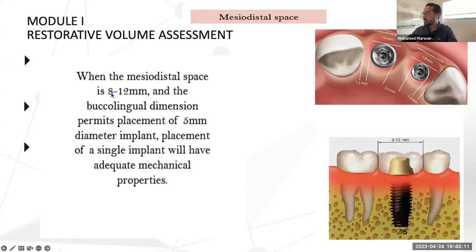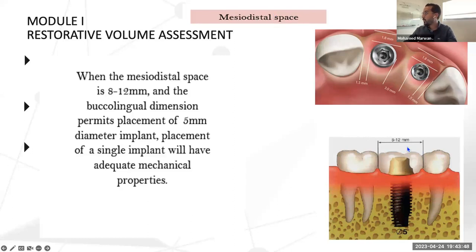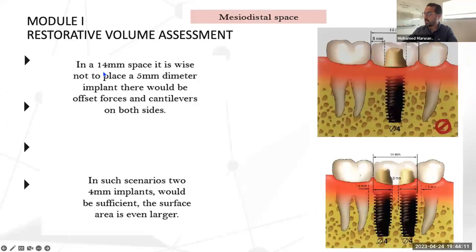The mesiodistal space often goes unnoticed by many implantologists. When we ask for a CBCT to check bone, we check only the buccolingual width, but the CBCT is not as accurate for determining mesiodistal width — that needs to be measured intraorally or on a cast. According to Carl Misch, if the mesiodistal space is 8 to 12 mm and the buccolingual dimension permits placement of a 5 mm diameter implant, then adequate mechanical properties will result.